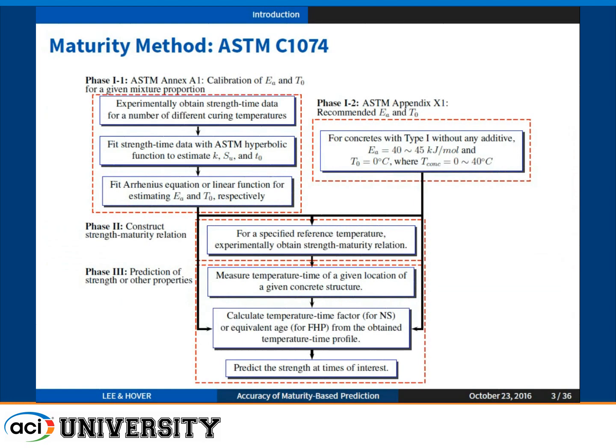Let me briefly introduce what ASTM 1074 looks like. It primarily consists of three different parts. Number one is the estimation or calibration of the activation energy or datum temperature for a given concrete mixture. Also, instead of calibrating those thermal parameters, you can also choose the default values.